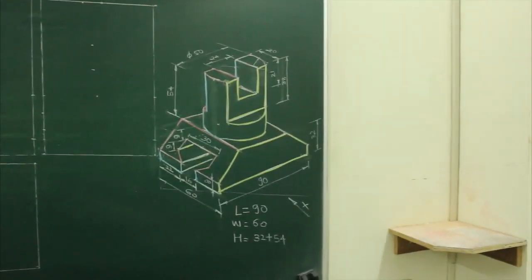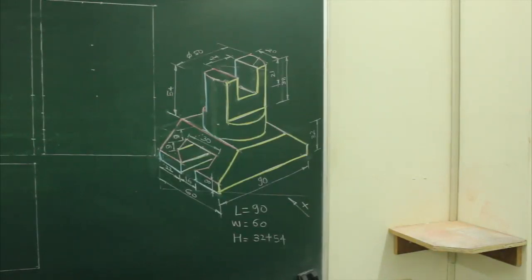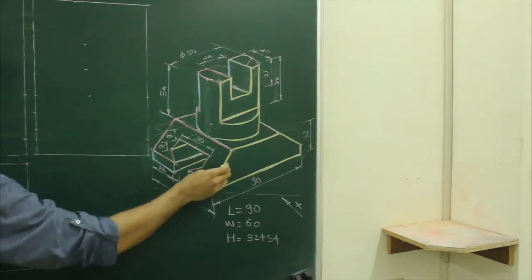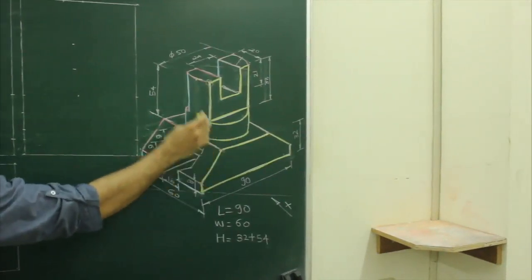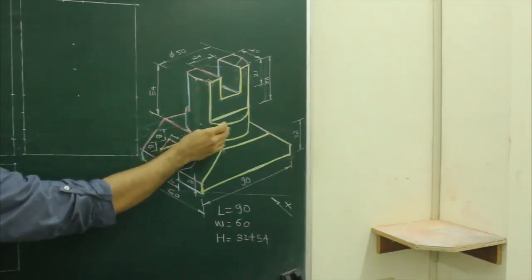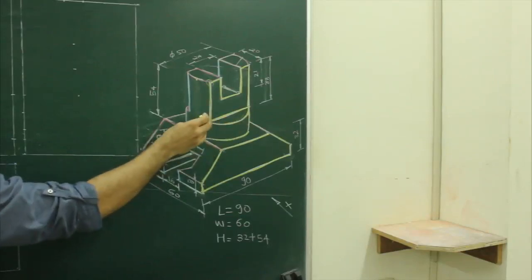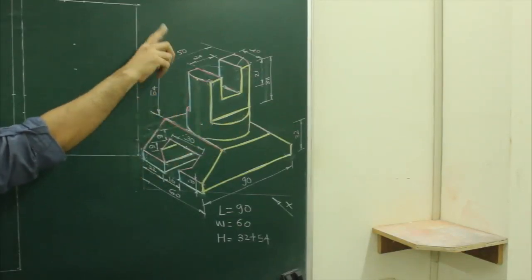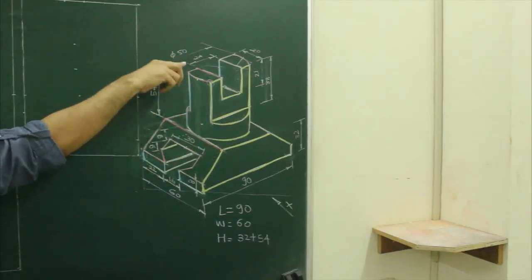In this diagram, length is 90, width is 60, and height is 32 plus 54. When you see from the front, you will see this part — this slope plus this circular portion. So what we will do in this case, first we will start with the circle.